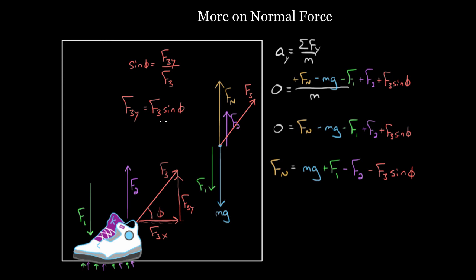One more way to step this problem up to the next level: say this room is actually an elevator accelerating upward with some acceleration a₀. In that case, nothing changes on the right-hand side. Sometimes people think if there's acceleration there's going to be some new force, but if those are the forces, those are the forces. The only thing that changes is that instead of zero on the left-hand side, you'd replace it with a₀. When you multiply by m, you'd have m·a₀ on the left, and you'd add that m·a₀ when solving for the normal force.